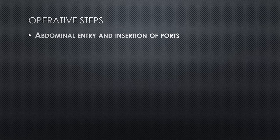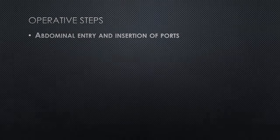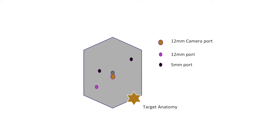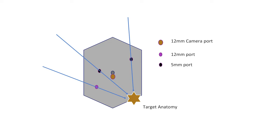We first begin with abdominal entry and insertion of the ports. While most of us will end up with a preferred port placement, it is important to know the logic and the compromises behind the choice of ports. The target anatomy for a high anterior resection is the left iliac fossa, where the primary dissection is around the tumor. The ports should allow access to this with good triangulation. I would recommend that the optical port be placed in the periumbilical area. A 12mm port should be placed in the right iliac fossa and 5mm ports in the right flank and in the left upper quadrant. This would allow not only the surgeon, but the camera and the assistant access to the target anatomy.